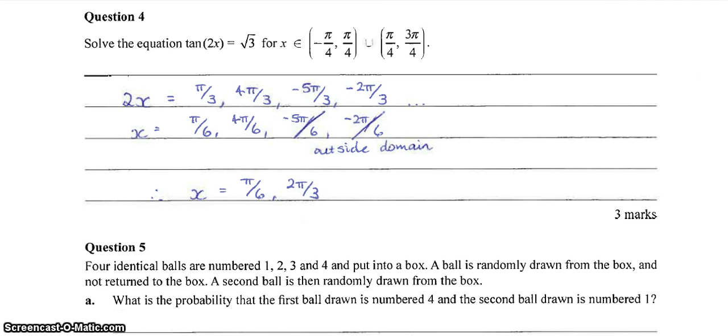Alright, moving on. A trig equation, we need to solve tan of 2x is equal to the square root of 3, where x is an element of this kind of strange domain here. If we're not too worried about that, if we just solve the function, so tan of pi on 3 is root 3. So that gives me my first solution. We have another one at 4 pi on 3.